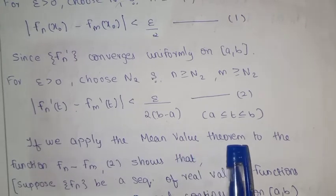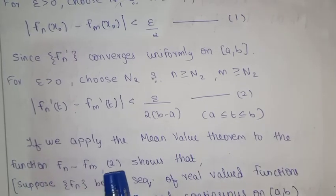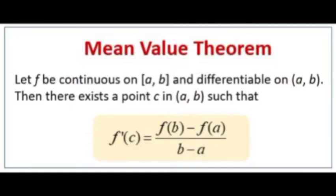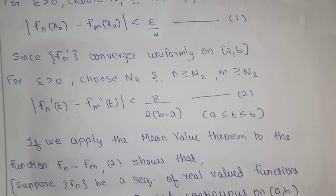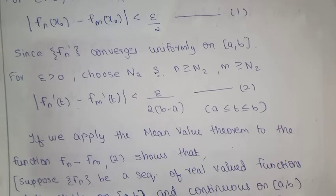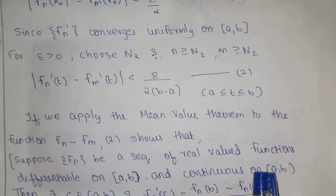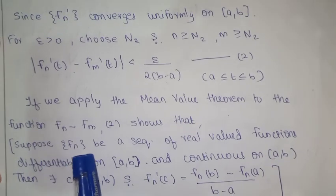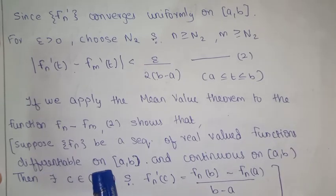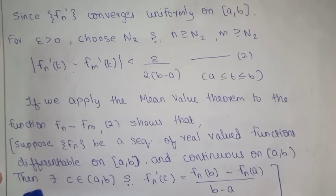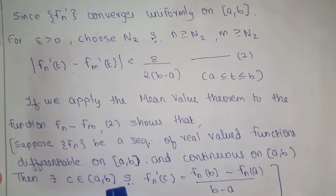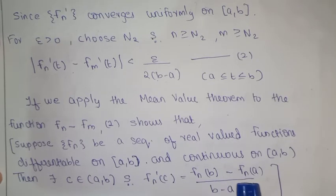We apply the Mean Value Theorem to the function fn - fm. Recall: if f is continuous on [a, b] and differentiable on (a, b), then there exists c in (a, b) such that f'(c) = (f(b) - f(a)) / (b - a). For sequences of real-valued functions differentiable on [a, b], there exists c in (a, b) such that fn'(c) = (fn(b) - fn(a)) / (b - a).